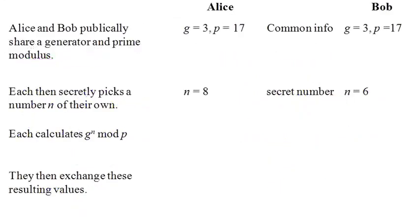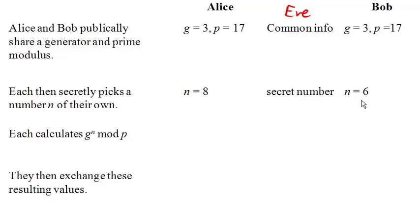Let's go through the Diffie-Hellman-Merkle key exchange. The key idea is that Alice and Bob want to establish a shared number as an encryption key, without Eve the eavesdropper being able to deduce it. Alice and Bob start by sharing a generator and a prime — Eve knows these too. Then each secretly picks their own number: Alice picks 8, Bob picks 6. Only they know their own secret numbers.